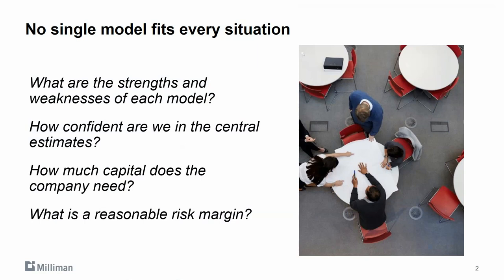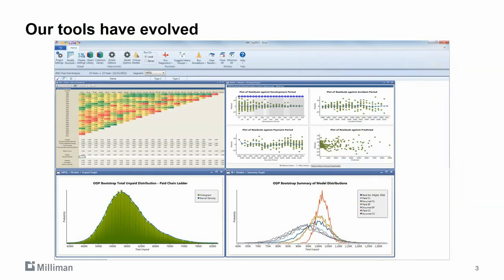To answer the first question about why the product was created, let's start with deterministic reserving methods. For common methods, we learn early in our career to understand their strengths and weaknesses. By comparison, this is relatively simple, since the methods are designed to estimate one number — the central estimate. But as our tools have evolved to help us estimate an entire distribution of possible outcomes, understanding the model's strengths and weaknesses is not as simple.